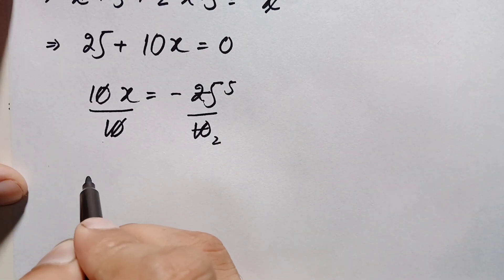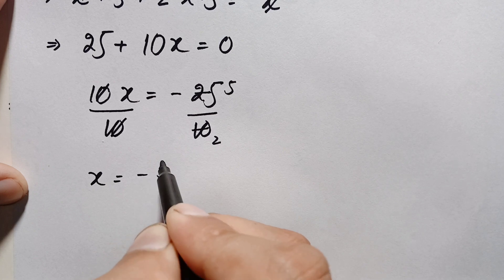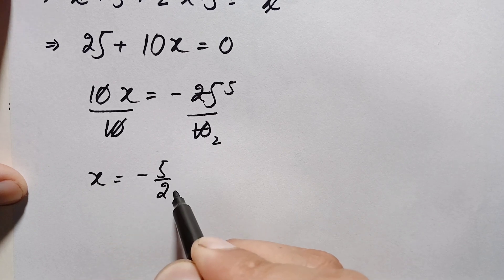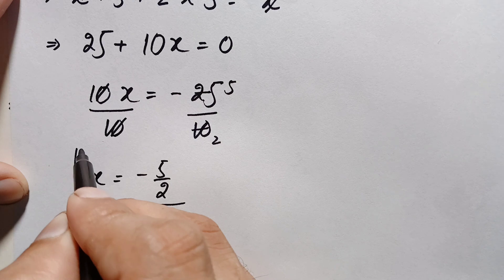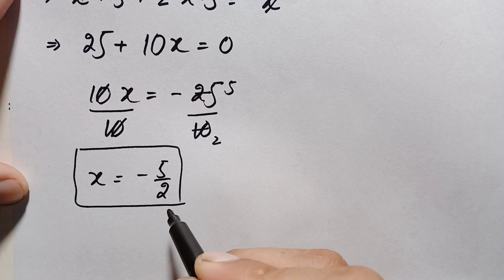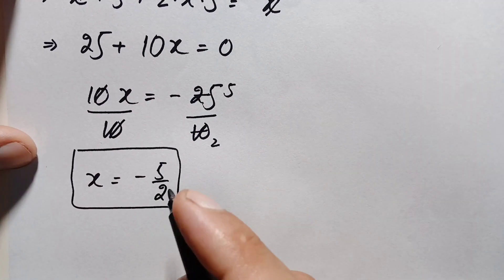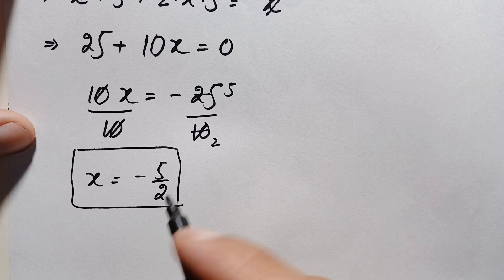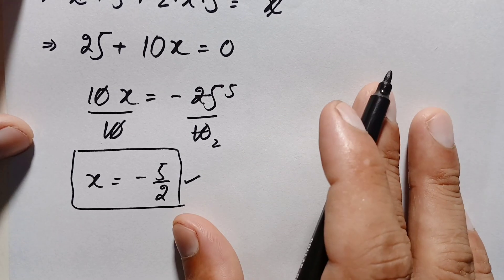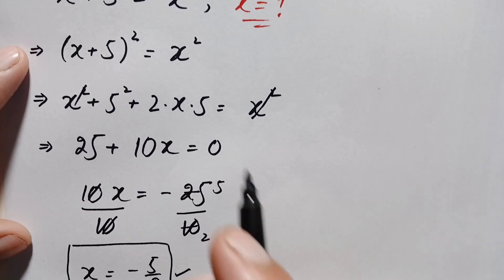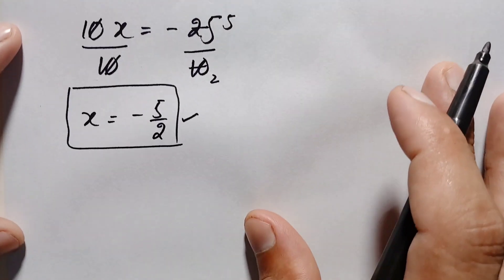So the final value of x is equal to negative 5 over 2. Now we will try to verify whether x equals negative 5 over 2 is the exact and correct real solution of this problem. We will verify this solution by substituting back into the original equation.